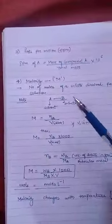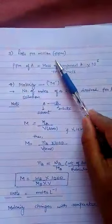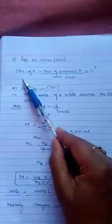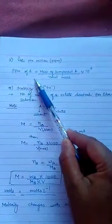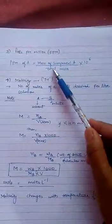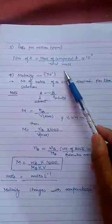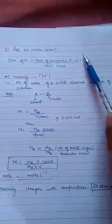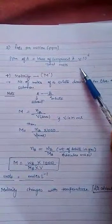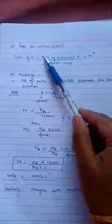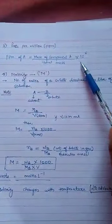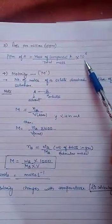Now I am discussing the third method, that is parts per million, expressed as ppm. If we have to find the ppm of component A, it would be equal to the mass of component A divided by total mass, into 10 to the power 6. We multiply by 10 to the power 6 because we are discussing parts per million.